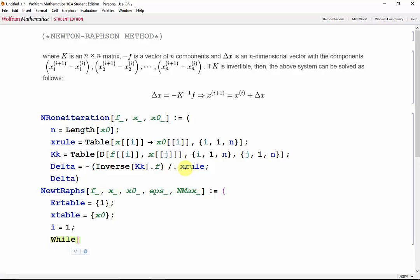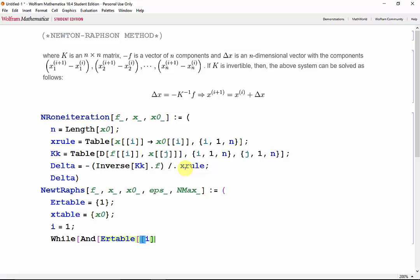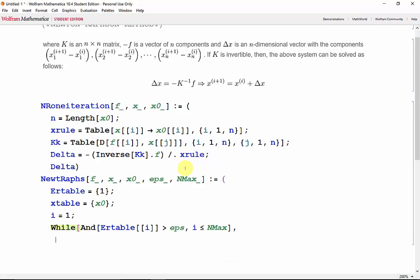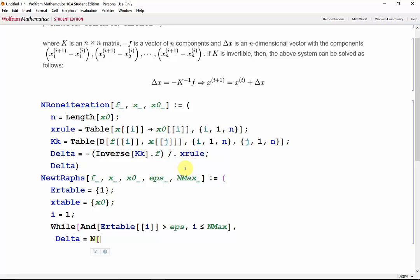Now while, we'll use the and function because we have two conditions that need to be met. Keep going so long as error table[i] is greater than the stopping error, and i is less than or equal to n max. Now we'll call our previous function to get the value of delta. So delta equals, we'll use a numeric function to make sure we don't get any fractions. And NROneIteration with f, x, and xtable[i] as the initial guess.